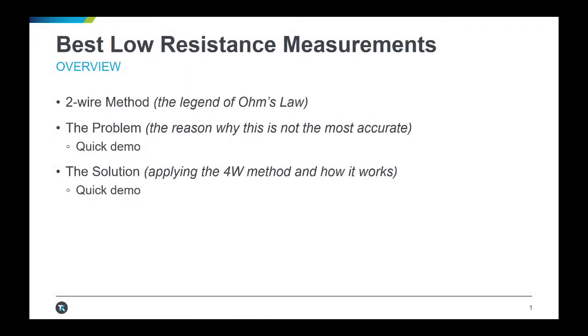First, we will briefly review Ohm's law as it applies to a standard two-wire measurement. Then we will examine why this can be problematic for low resistance values and provide a demonstration of this error. Finally, we will identify the corrective solution, the four-wire measurement method, and the details about how it works. We will conclude with a demo of the four-wire measurement method in action.